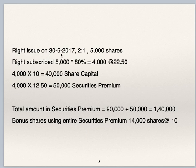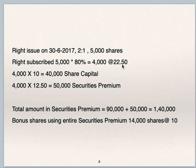They issued right shares on 30th June 2017, ratio 2:1. So for 10,000 shares, 5,000 right shares are offered. But actually only 80% were subscribed, so 4,000 right shares are subscribed at Rs 22.50. Face value of the equity share is Rs 10, so 4,000 × Rs 10 = Rs 40,000 goes to share capital, and 4,000 × Rs 12.50 = Rs 50,000 goes to securities premium account. So the total amount in securities premium is Rs 90,000 plus Rs 50,000 = Rs 1,40,000.